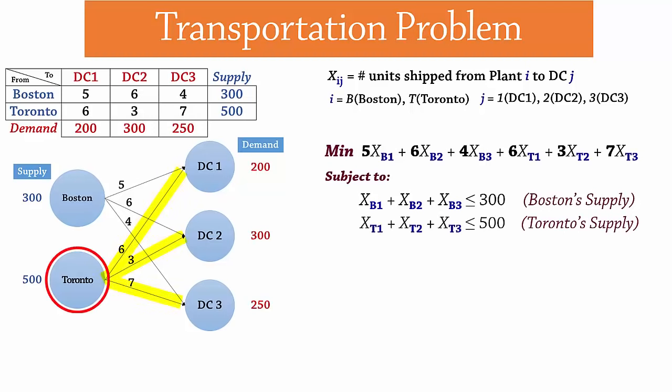We do the same for Toronto. XT1 plus XT2 plus XT3 is less than or equal to 500. Note here that total supply exceeds total demand, that is, we will not end up exhausting capacity. And that's why we use the less than or equal sign.